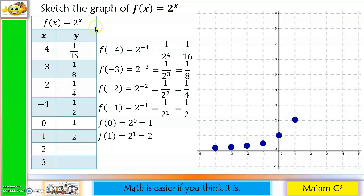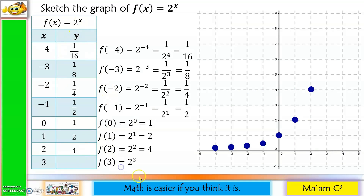For x = 2: f(2) = 2 squared, which equals 4. We plot the point at (2, 4). For x = 3: f(3) = 2 cubed, which equals 8. We plot the point at (3, 8).